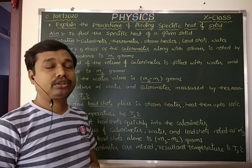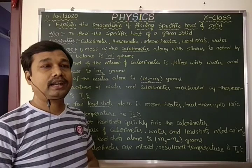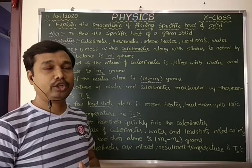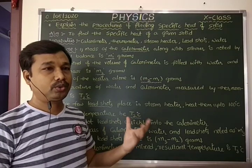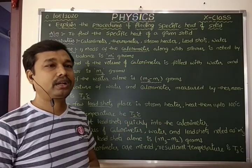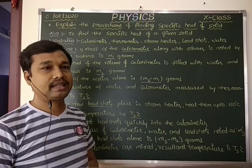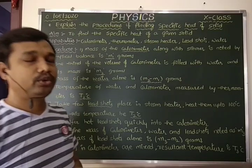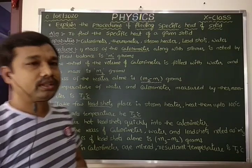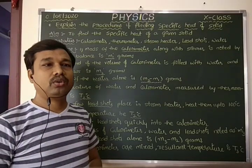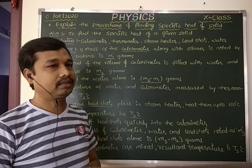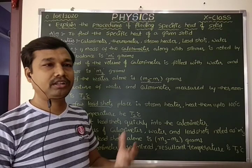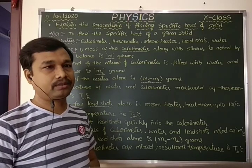Then we need to take the lead shots and place them in the steam heater. Heat them up to 100 degrees Celsius and note their temperature as T2 degrees Celsius, measured by thermometer.